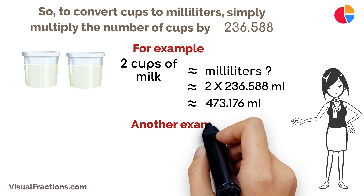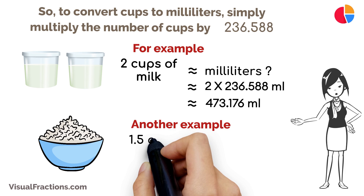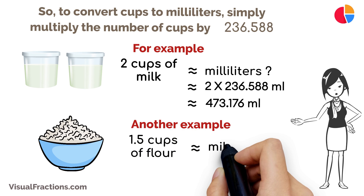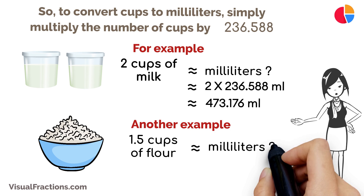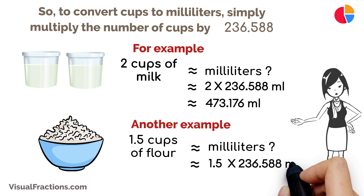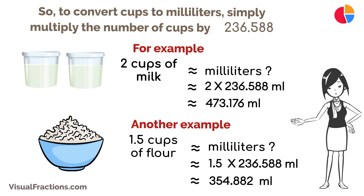Another example: if you need to measure 1.5 cups of flour, to convert that to milliliters, you do 1.5 cups times 236.588, which equals approximately 354.882 milliliters. And that's all there is to it.